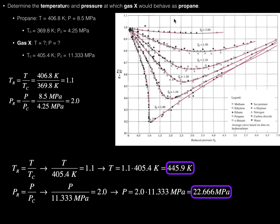We could go to the graph, find the reduced pressure of 2 up to the 1.1 reduced temperature isotherm, and interpolate the compression factor. This is how you solve a problem to find the temperature and pressure at which a particular gas behaves the same as a known gas. The key is you need one gas where you know everything — here that's propane — and for the unknown gas you still need to know its critical temperature and critical pressure. Please like this video and subscribe for future videos. Thank you very much.